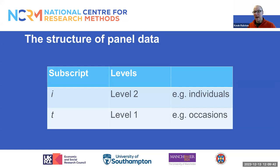Fixed and random effects models enable us to take account of this panel data structure, where there are occasions nested within individuals. We can give this some handy notation: we give the level 2 in the data structure the subscript I for individuals, and the level 1 in the data the subscript T for occasions or time points when individuals are observed.